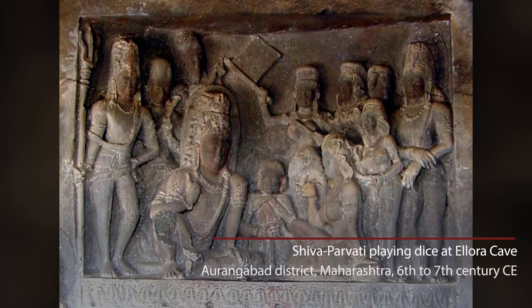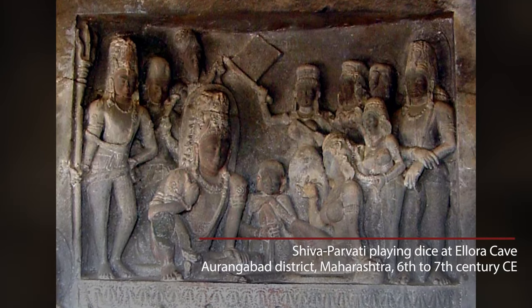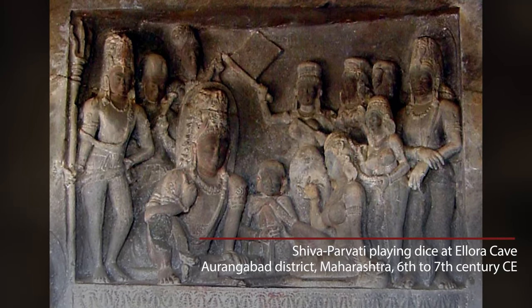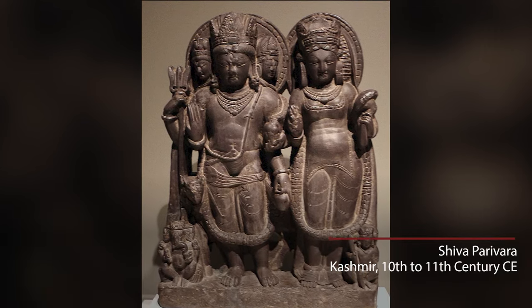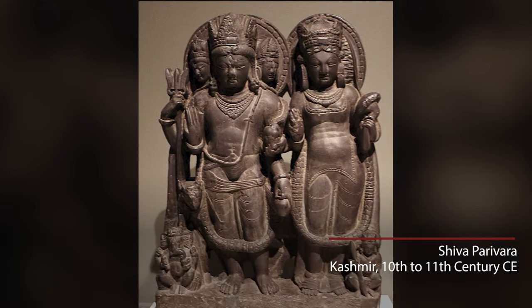What is important to remember is that the transformation of Shiva from hermit to householder was in many ways a reaction to the monastic orders, where householders were becoming hermits. Therefore, these images appear in the 5th century when the Puranic traditions are rising and the old Buddhist and Jain practices are on the way out. This transformation of Shiva over space and time is absolutely amazing.